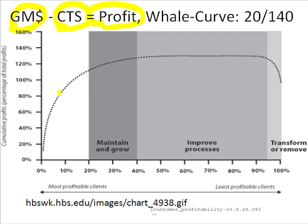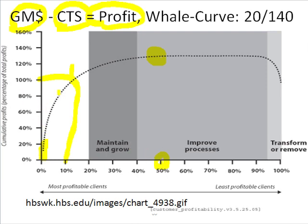Then we can take the number one most profitable customer and place them first, take number two and add them, and so forth. By the time we get to 10% of the customers, we're getting to about 100% of the operating profit. In this particular slide, the peak internal profits from customers settles out at about 125% at maybe 50% of the customers. It's called a whale curve because this looks like the front end of a whale, and over here is the tail of the whale.